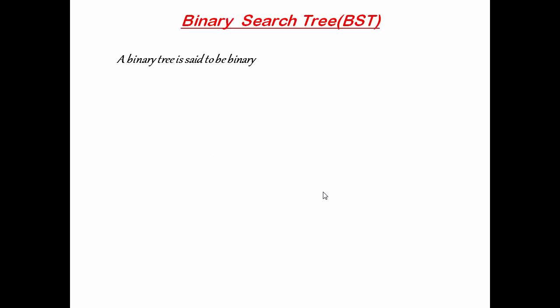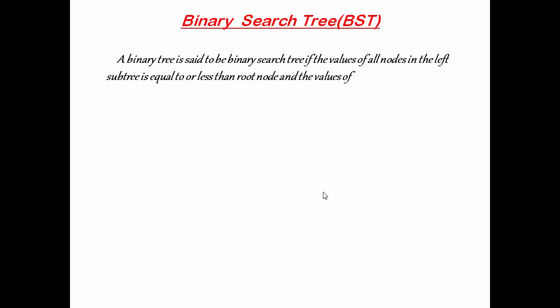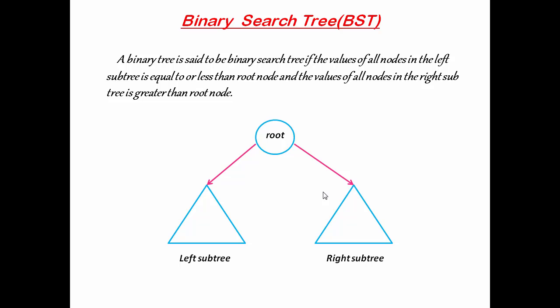What is a binary search tree? A binary tree is said to be a binary search tree if the value of all the nodes in the left subtree is equal to or less than the root node, and the value of all the nodes of the right subtree is greater than the root node. For a recursive structure, the left child will be the root of the left subtree and the right child will be the root of the right subtree.